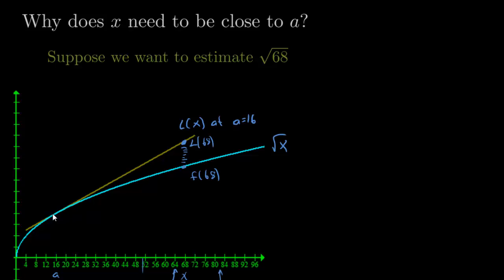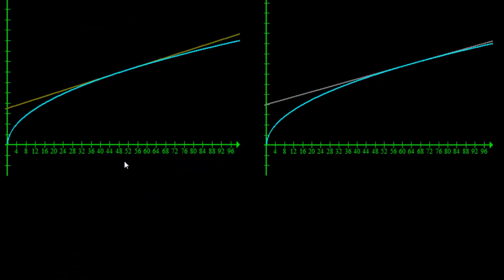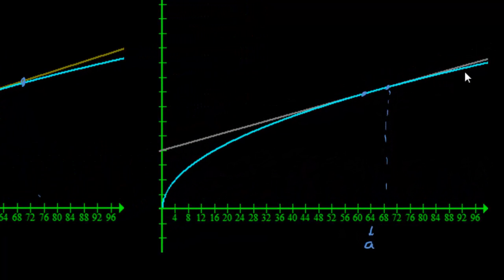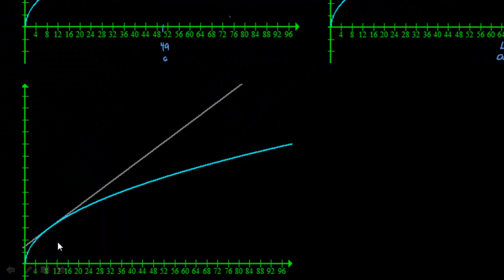So don't do something very far away from what you're trying to evaluate. Notice what happens if I use the linearization at a equals 49 — at x equals 68 you can see that's actually a pretty good estimate. Or let a equal 64 — you can see on this graph that the square root of 68 looks like it's exactly on the tangent line, barely any difference. But if I chose a equals 9, which is really far away from 68, notice that it's a huge difference between the values.